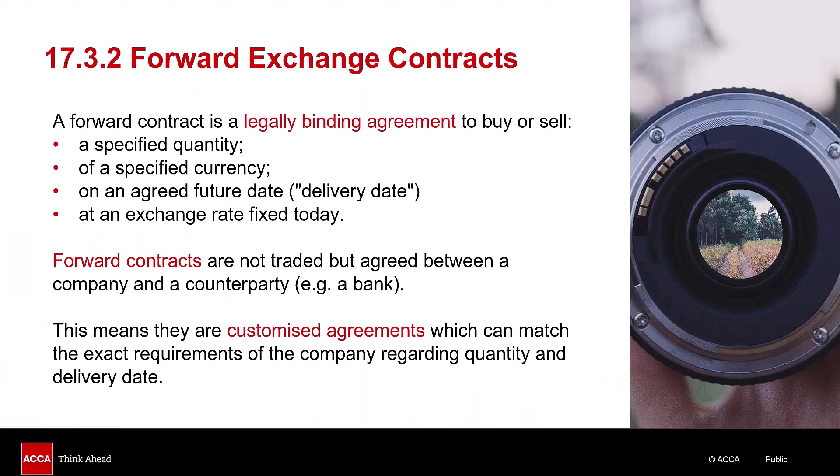Let's now look at forward exchange contracts — this is in chapter 17, section 3.2 of the study hub. A forward contract is a legally binding agreement to buy or sell a specified quantity of a specified currency on an agreed future date at an exchange rate fixed today. Forward contracts aren't traded but agreed between a company and a counterparty, for example a bank — they are over the counter, not traded. This means they are customised agreements which can be matched exactly with the requirements of the company regarding quantity and delivery date. Please remember they are binding — you have to go through with them; it's an obligation.